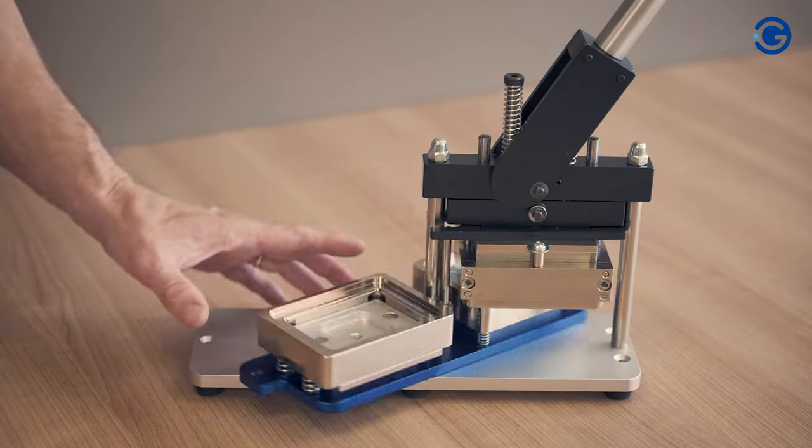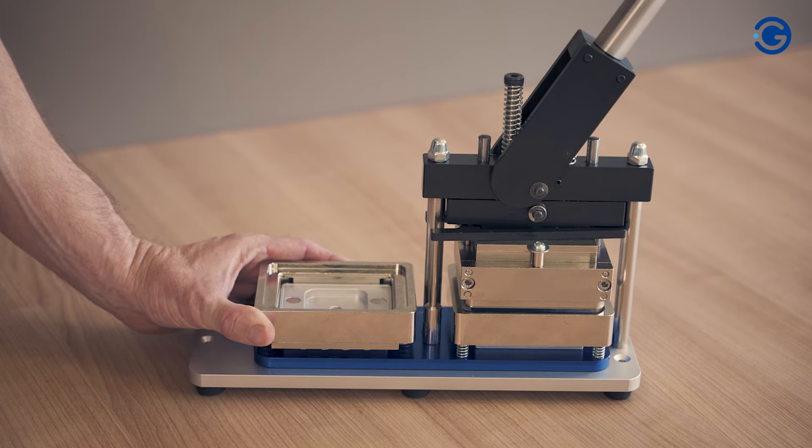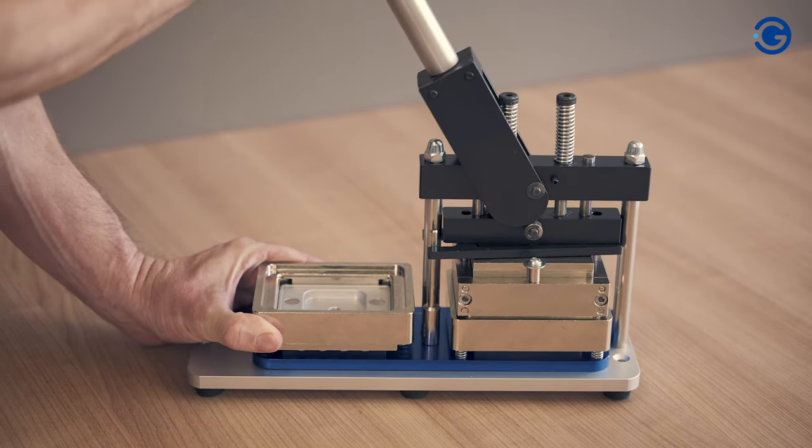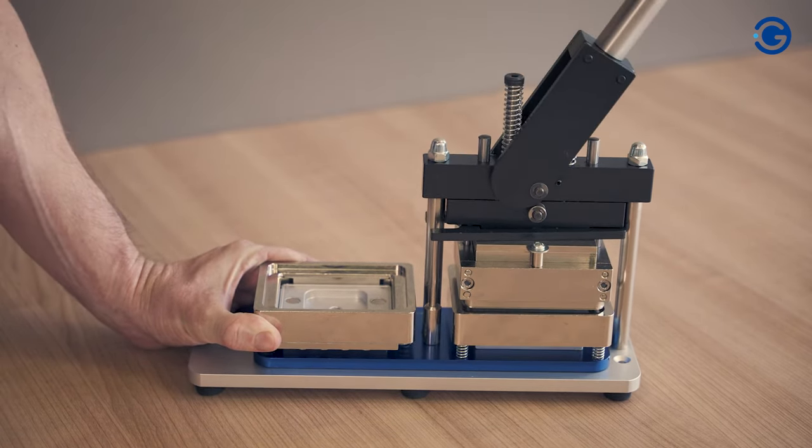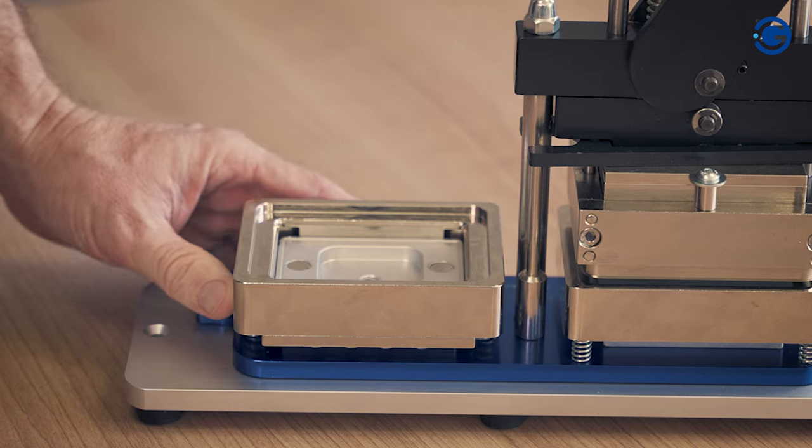Turn the blue base until it stops. Mould number one is correctly positioned under the upper mould. Pull the lever down until it stops. Do not use excessive force. The front part of the magnet is now ready and will remain in the upper mould.